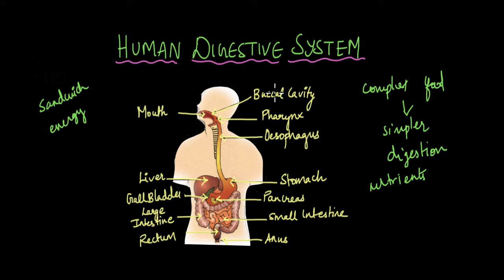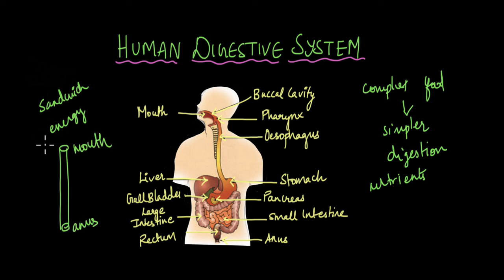We are going to focus on the mouth, buccal cavity, the esophagus and the stomach. In another video, we will talk about the small and large intestines and the accessory organs like the liver, gallbladder and pancreas. You can think of the digestive system as one long tube that extends from the mouth to the anus. The food, as we take it in through the mouth, spends a lot of time inside your digestive system where it is completely broken down into simple small molecules that can be taken up by the blood. And whatever waste is produced is excreted out of the anus.